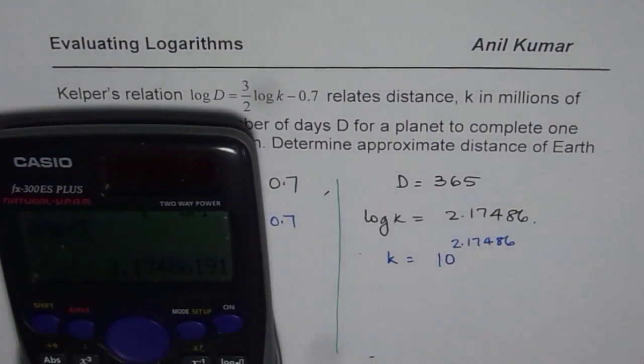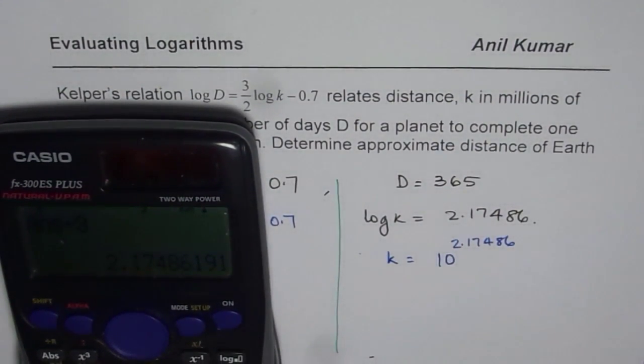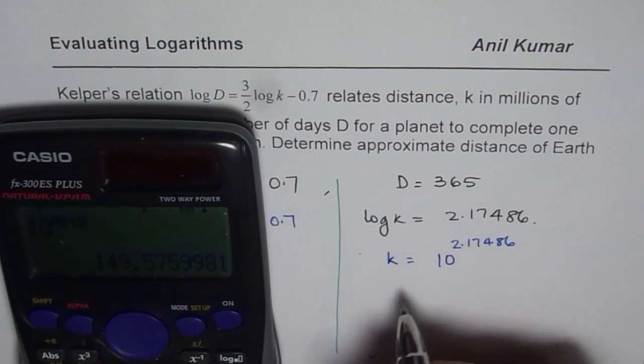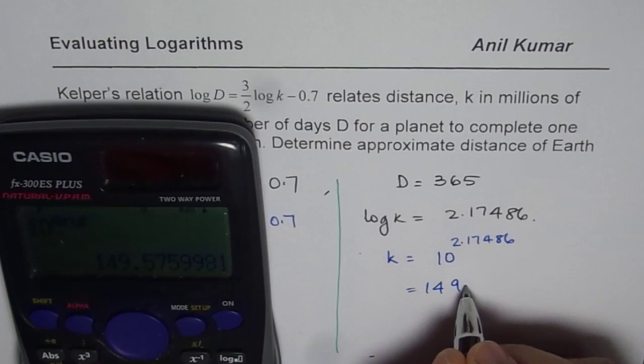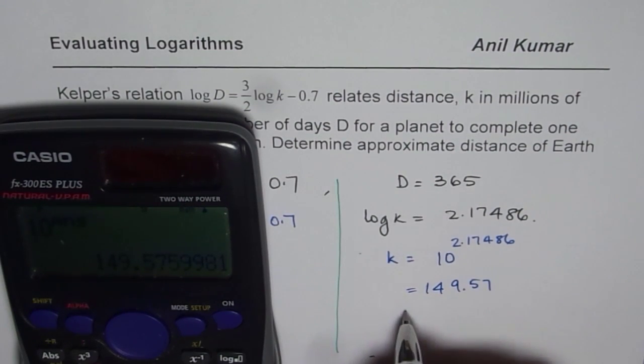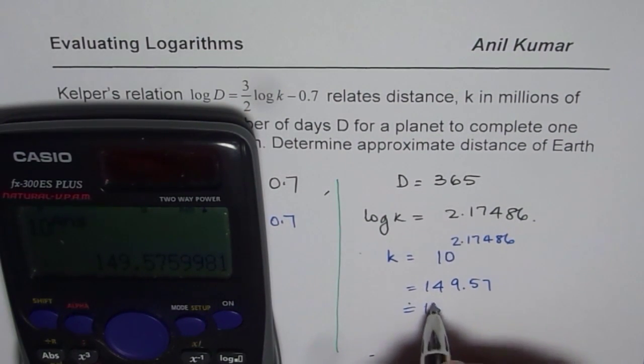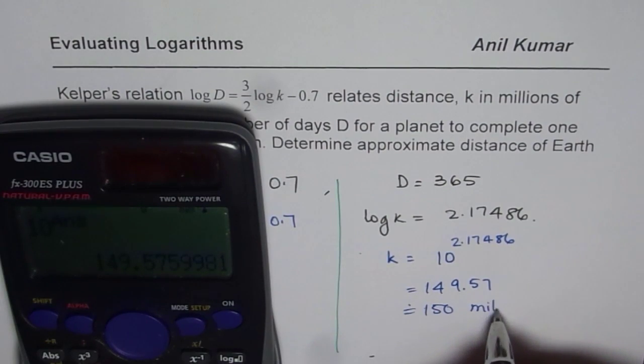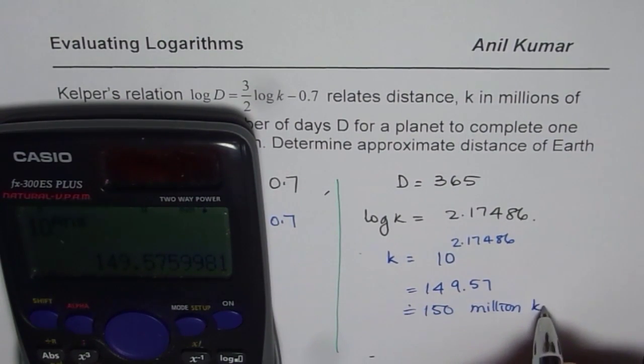We already have 2.17486 in our calculator. We can say 10 to the power of the answer, which is equal to 149.57. So we can approximate this to 150 million kilometers.